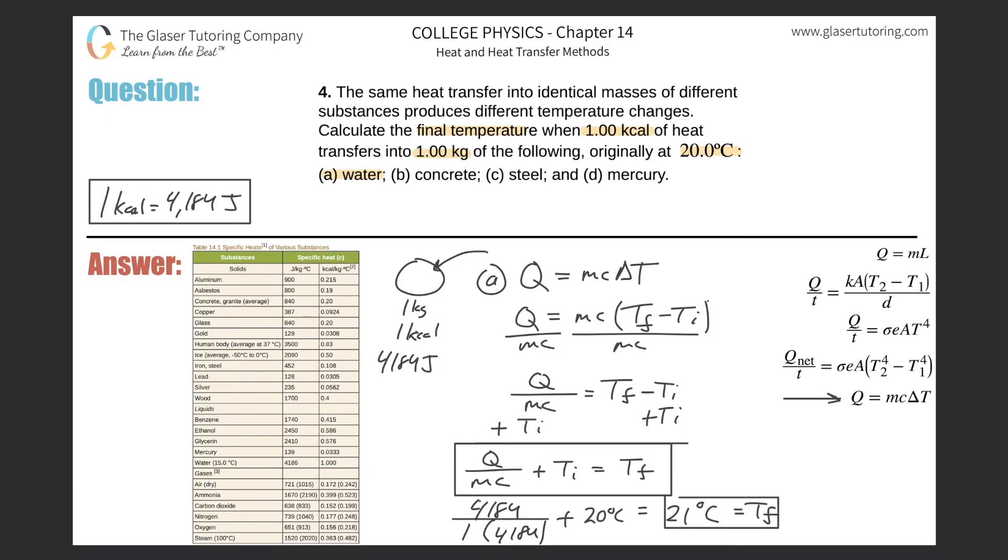Now, the only way this is going to change then, is the heat still the same for every example. The mass is still the same for every example. And the initial temperature is the same. The only thing that's going to change now is the type of material, concrete, steel, and mercury. So all you now need to do is basically the only thing that's going to change here is your specific heat. And that means that we're going to do the same calculation. But instead, we're not going to use the 4,184.